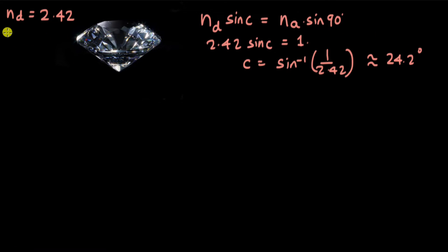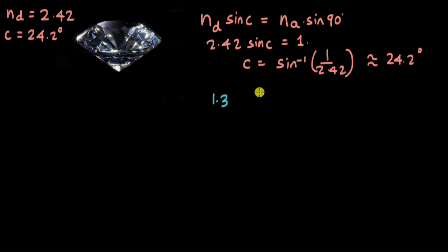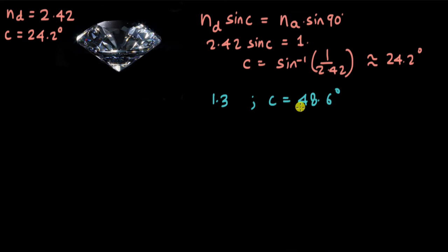The critical angle comes out to be approximately 24.2 degrees. To get some idea of whether this angle is large or small, we can compare it with the critical angle of the water-air interface. The refractive index of water is just 1.3, and the critical angle approximately comes out to be 48.6 degrees — almost double. So what does this low critical angle for diamond really mean?